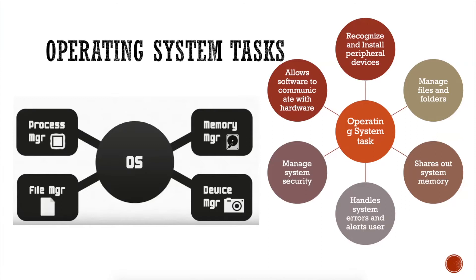A student says they've heard of BIOS but never seen it. When you want to install an operating system, you choose the booting order. To install Windows, you need a USB flash drive with the OS files, connect it to the computer, and set the first boot device to the USB in the BIOS — Basic Input Output System.